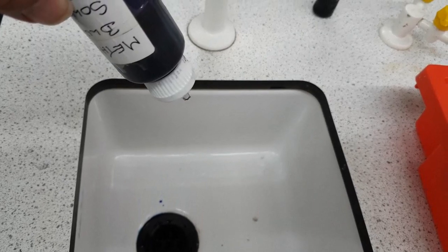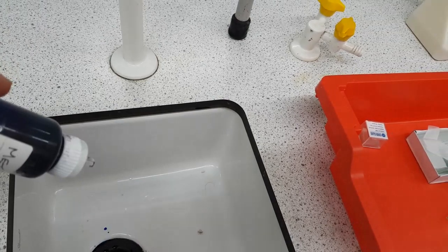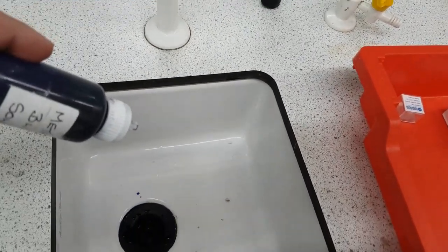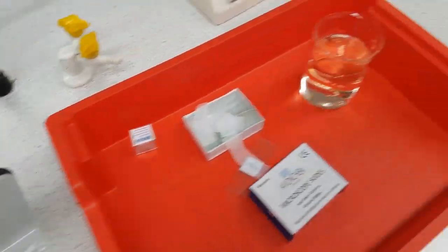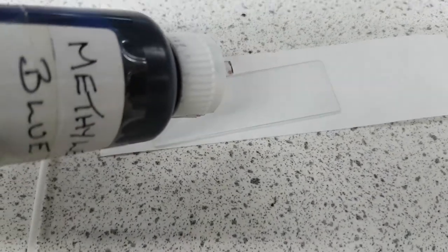So I now kind of figure out how much pressure I need to put on in order to get one drop of methylene blue out. So go back to your slide and where your cheek cells are you're just going to add one drop of methylene blue.